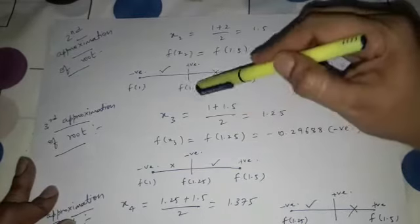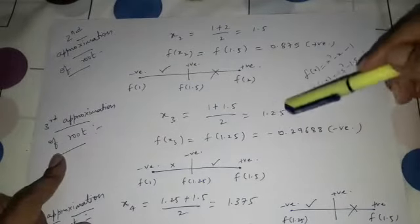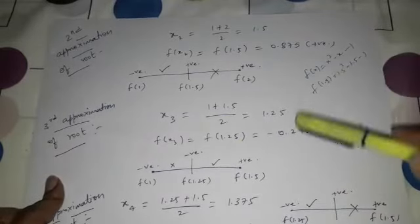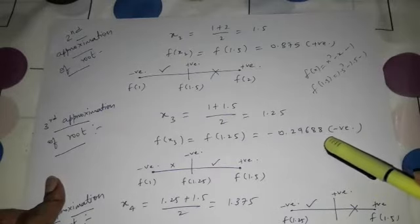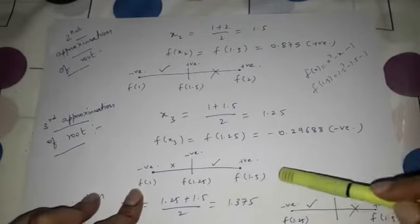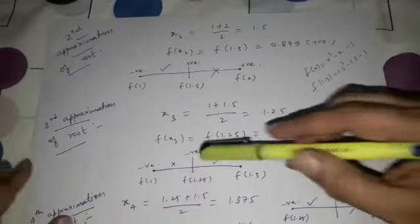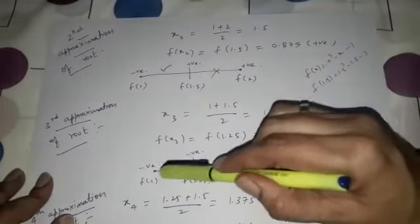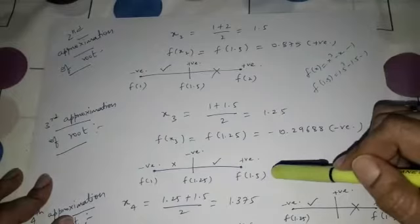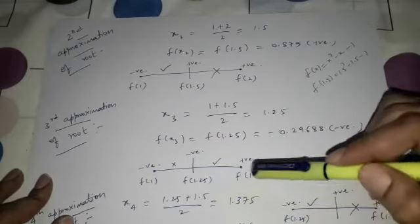In the next step, I halve this interval again. The third approximation of root: x3 = (1 + 1.5)/2 = 1.25. So f(1.25) = -0.29688, which is negative. Since f(1) × f(1.25) = negative × negative = positive, the root does not exist between 1 and 1.25. Whereas f(1.25) × f(1.5) = negative × positive = negative, so root exists between 1.25 and 1.5.